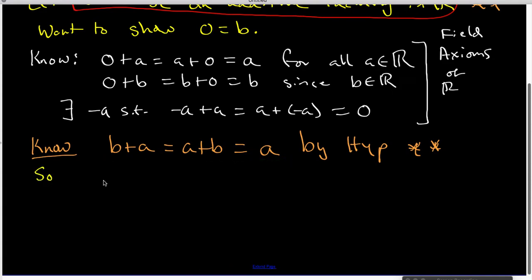We know that 0+A is equal to A, and A is equal to B+A. So that lets me get 0+A is equal to B+A. And now I'm going to add -A to the back side of both sides of this equation.